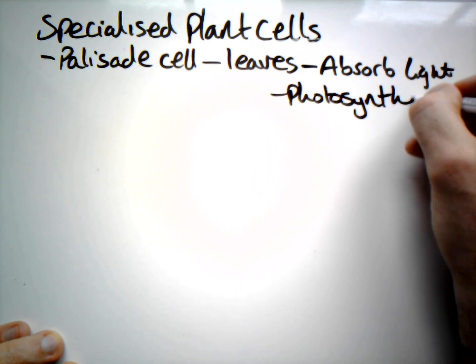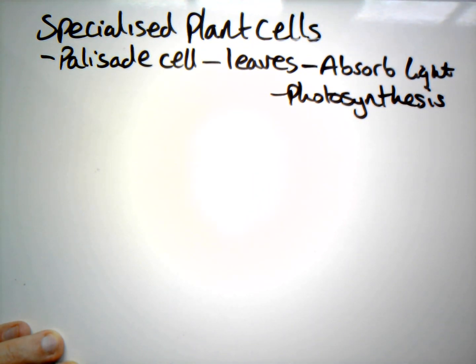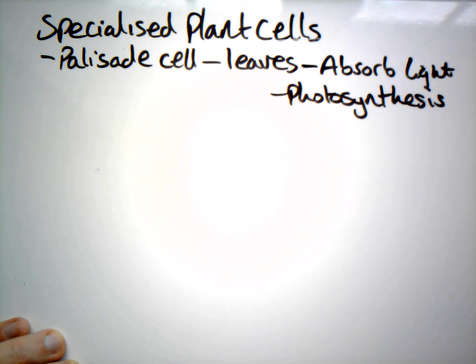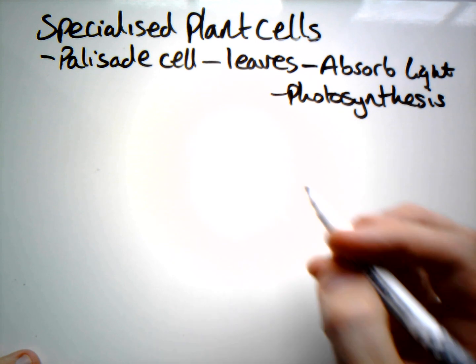Photosynthesis is the absorption of light and the use of carbon dioxide and water to produce glucose. That glucose can then be used in respiration for a release of energy for the plant to use.